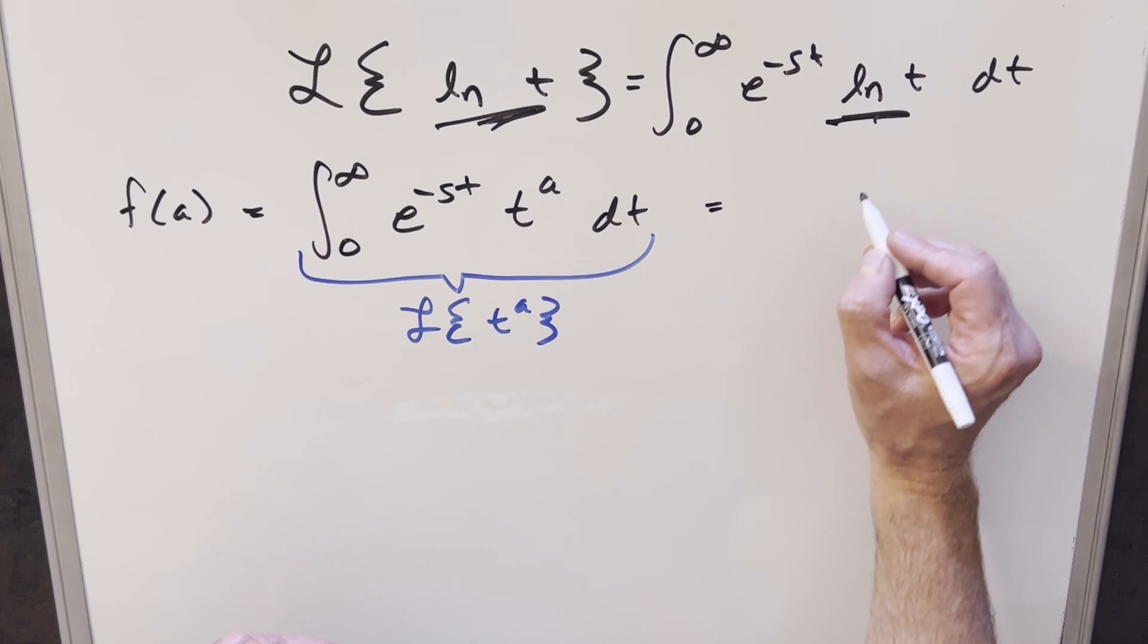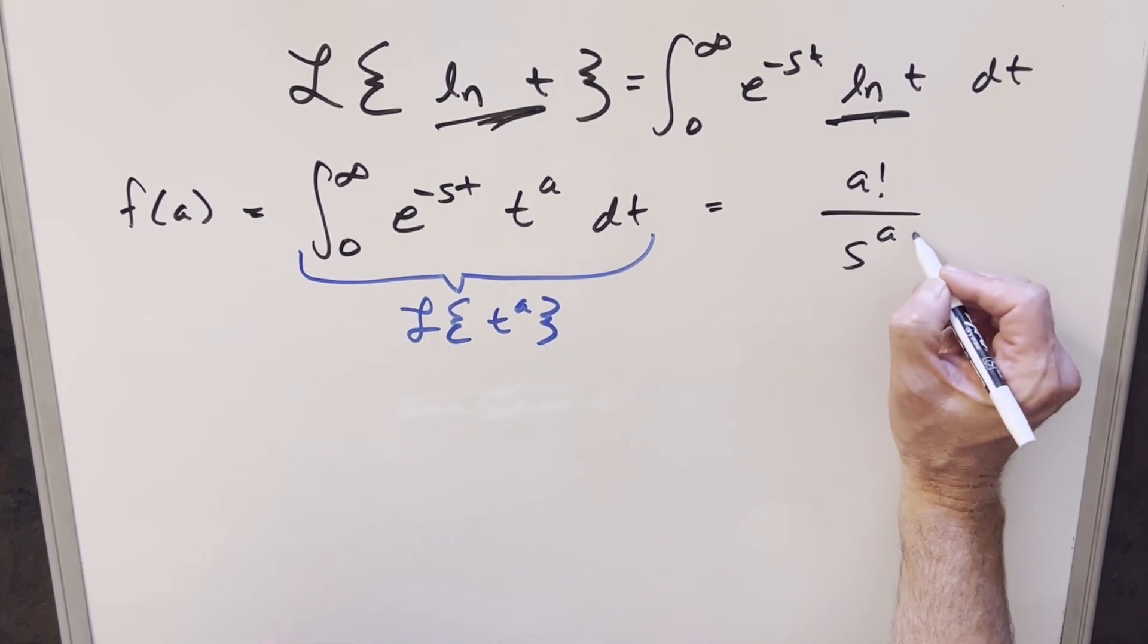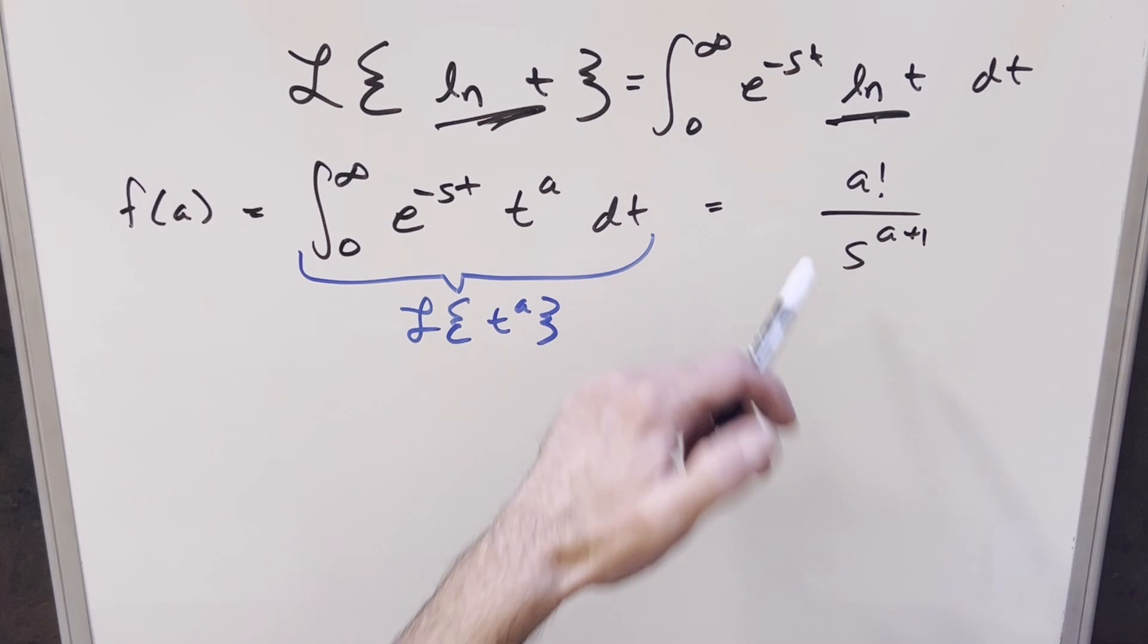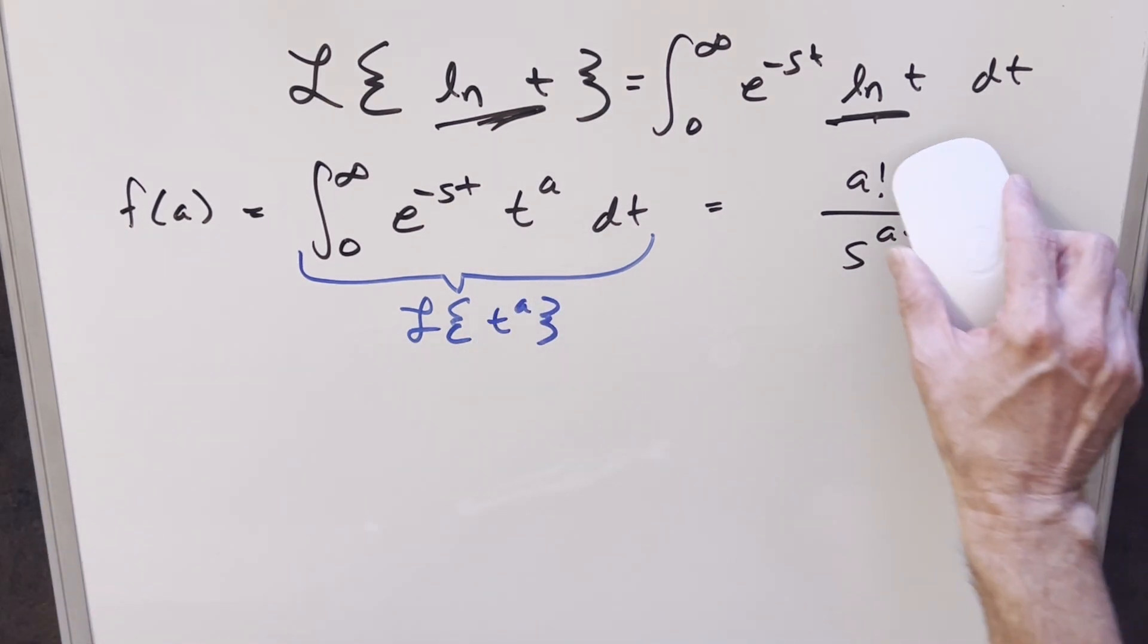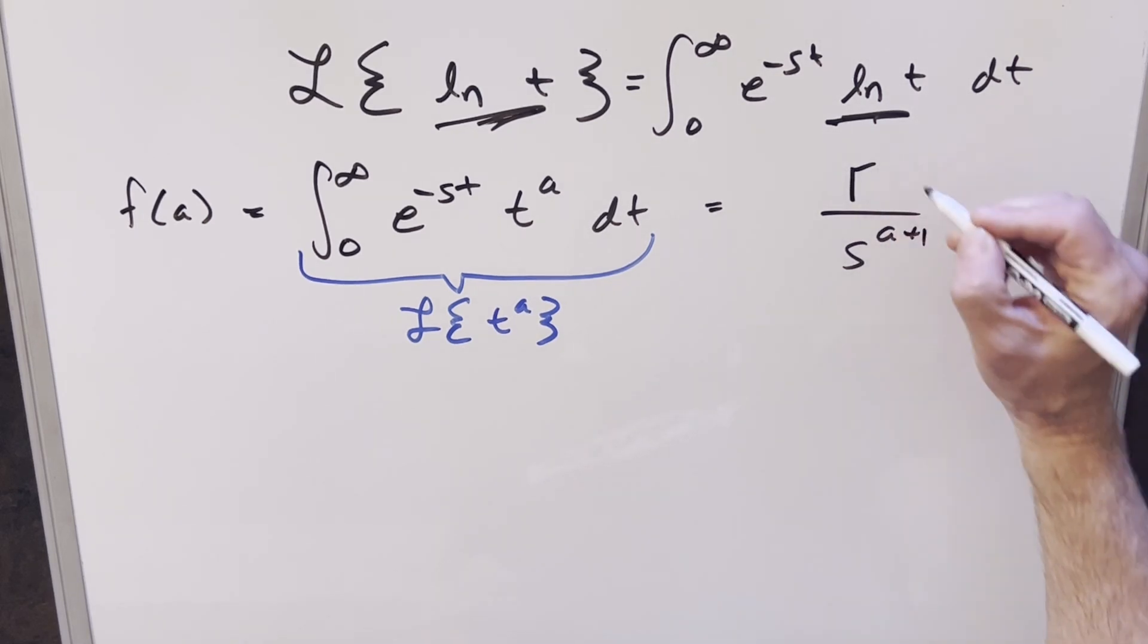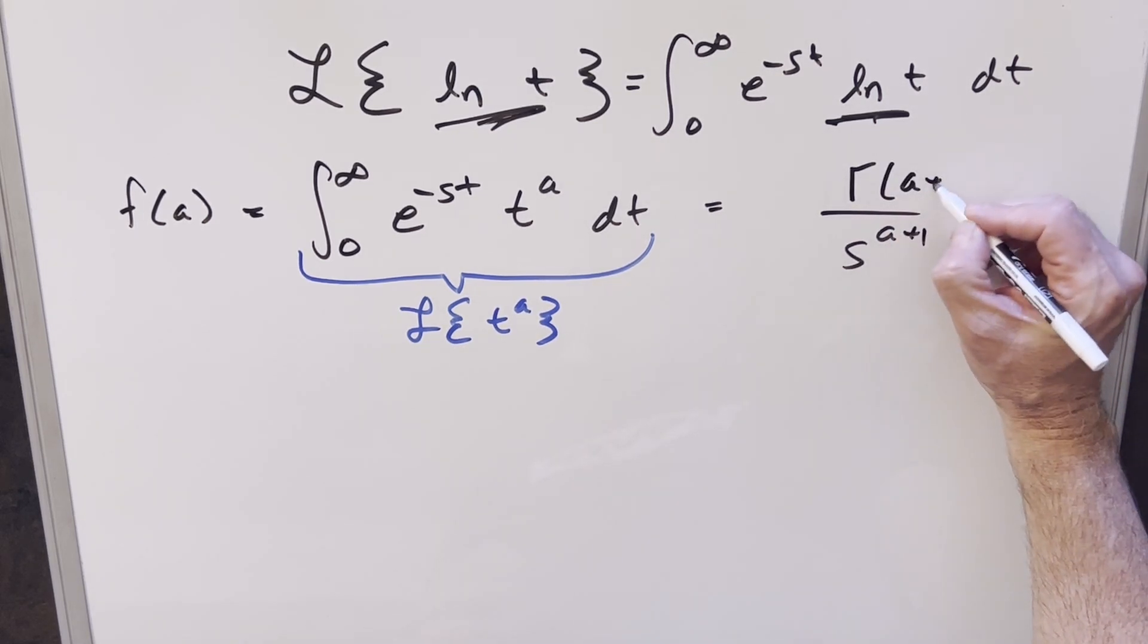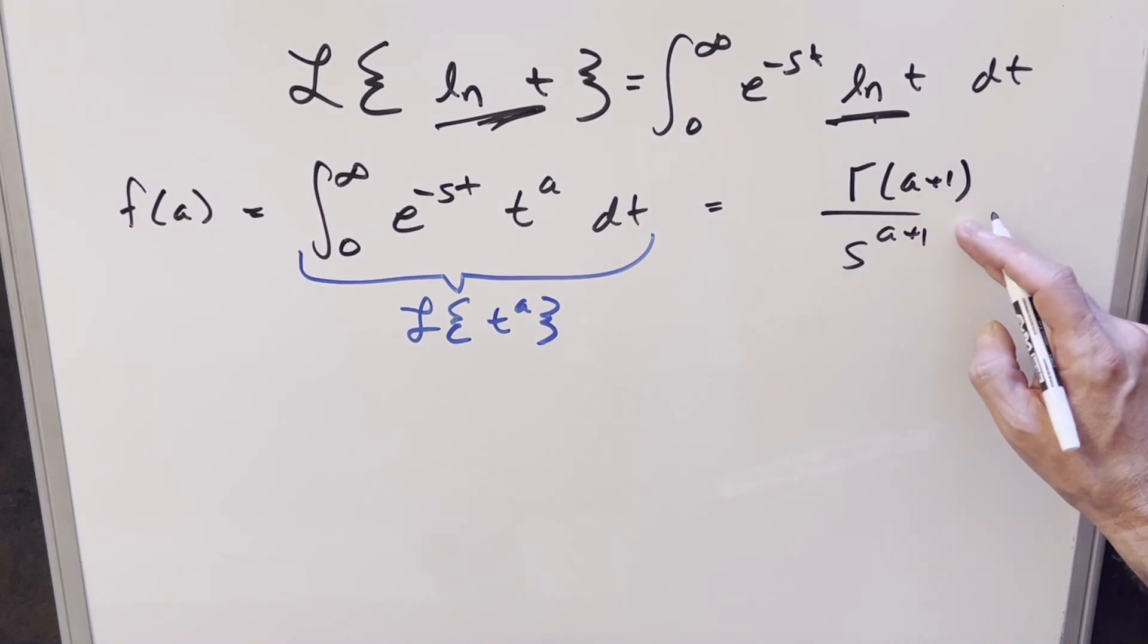And for this, we have a formula. Sometimes you'll see this as a factorial over s to the a plus one. But with a factorial, we're usually thinking of a as an integer. We don't want that here. We want a to be continuous variable. So what we'll do is we'll set this. We can write this instead as gamma of a plus one, which is the same thing as a factorial when a is a positive integer.